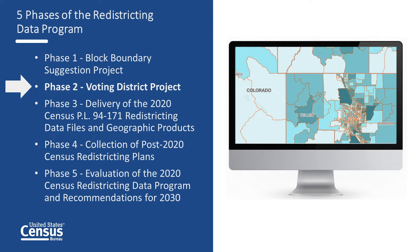Phase 2 is the Voting District Project, which provided states the opportunity to submit their voting districts — for example, wards and precincts — for inclusion in the 2020 Census Redistricting data tabulations. This ensures states can get the 2020 Census data they need for their voting districts. As was the case in Phase 1, during Phase 2, states had the opportunity to submit suggested legal boundary updates as well as updates to other geographic areas, allowing states to construct some of the small area geography they need for legislative redistricting.